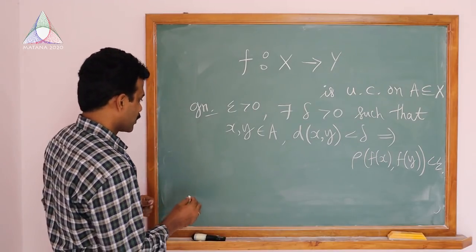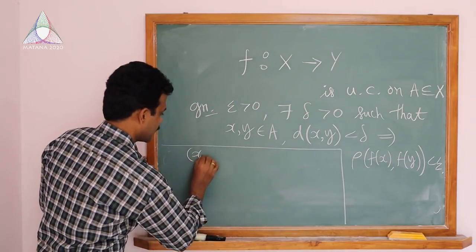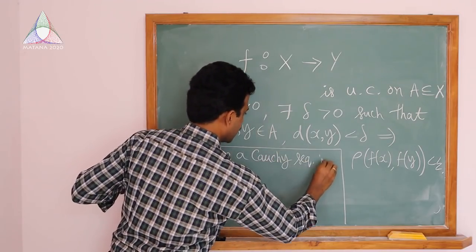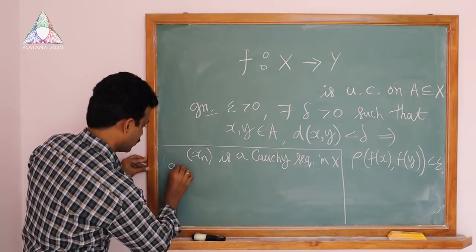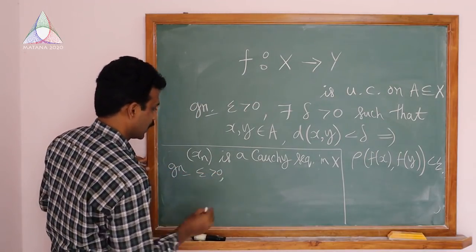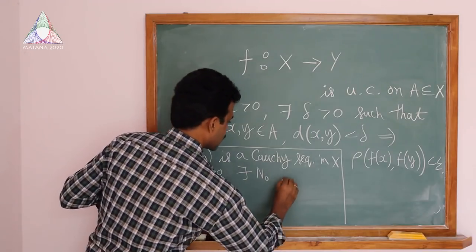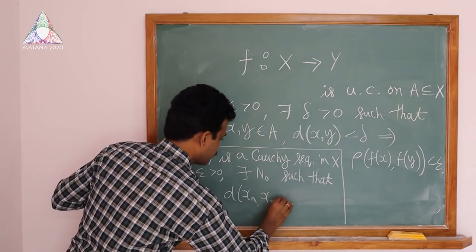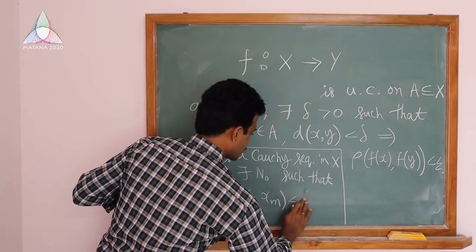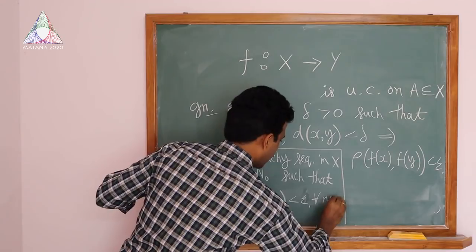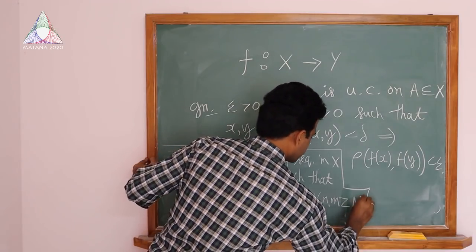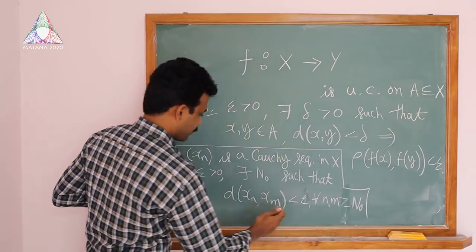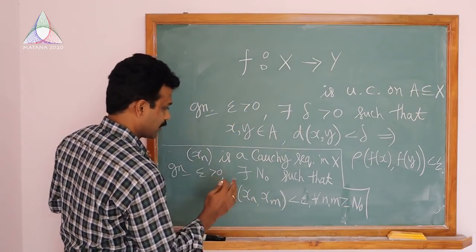The proof is simple. Suppose xn is a Cauchy sequence in A. For any given epsilon greater than 0, we can find a natural number L0 such that d(xn, xm) is less than epsilon for all n, m greater than or equal to L0. From stage L0 onwards, all terms of the sequence xn are close enough.